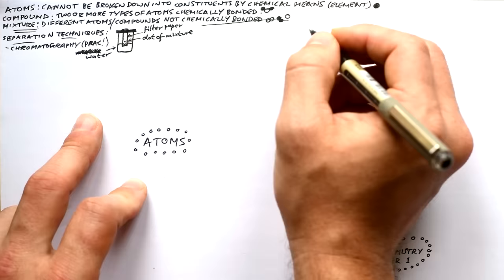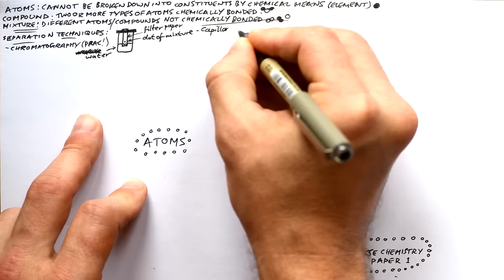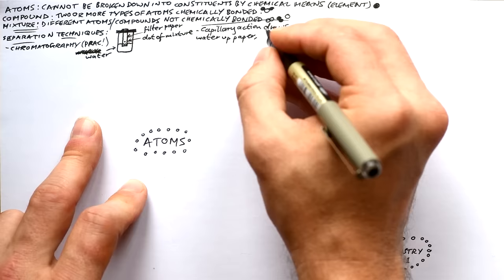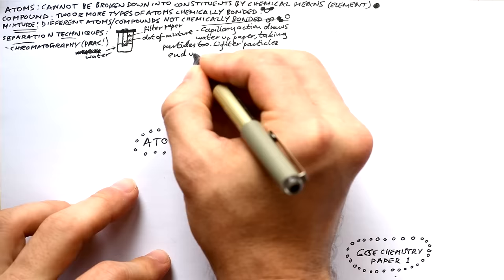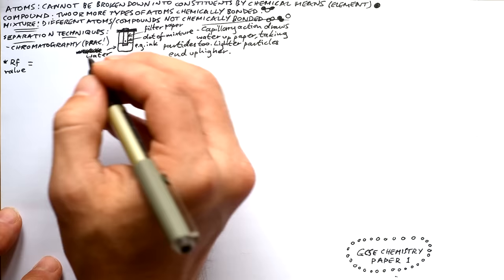There are a few ways to separate a mixture. First is chromatography — we have a bit of filter paper with a dot of the mixture about a centimeter above the water line. The filter paper is dipped in water, which gets drawn up the paper by capillary action, dragging particles of the mixture with it. Lighter particles end up highest on the paper. It's a good idea to draw lines in pencil where the dot was and where the water ends up.